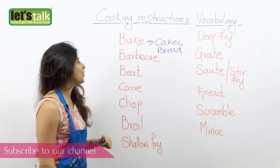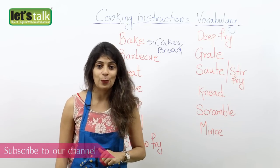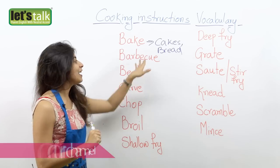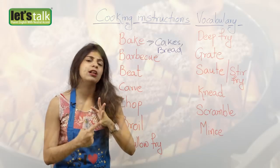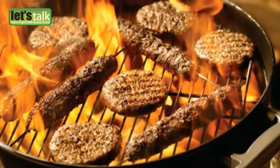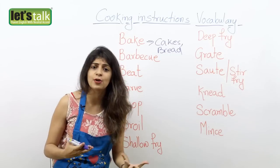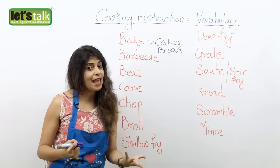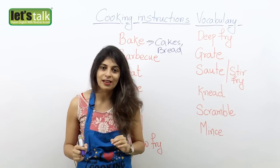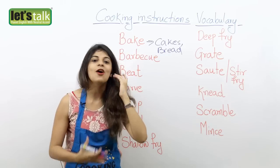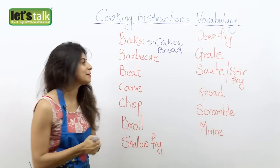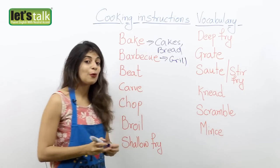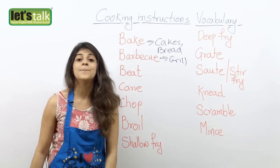Another word is barbecue. Barbecue means when you grill your food. You probably grill your meat or even veggies — like grilled potatoes, grilled chicken, or beef steaks. You put it on a grill and cook it on fire or hot coals. So you grill your food, and that's what we call barbecue.